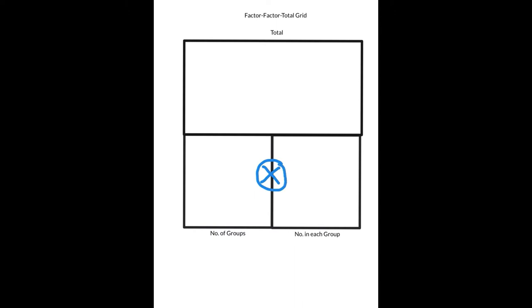A few years ago a teacher who had been working with primary students with part-part-whole grids asked me if I could do the same kind of grid for multiplication. So I started experimenting and came up with this idea of a factor-factor-total grid. It's set up essentially the same way as part-part-whole grids, but now we add one more feature: a multiplication sign between the two parts, which are now going to be the factors.